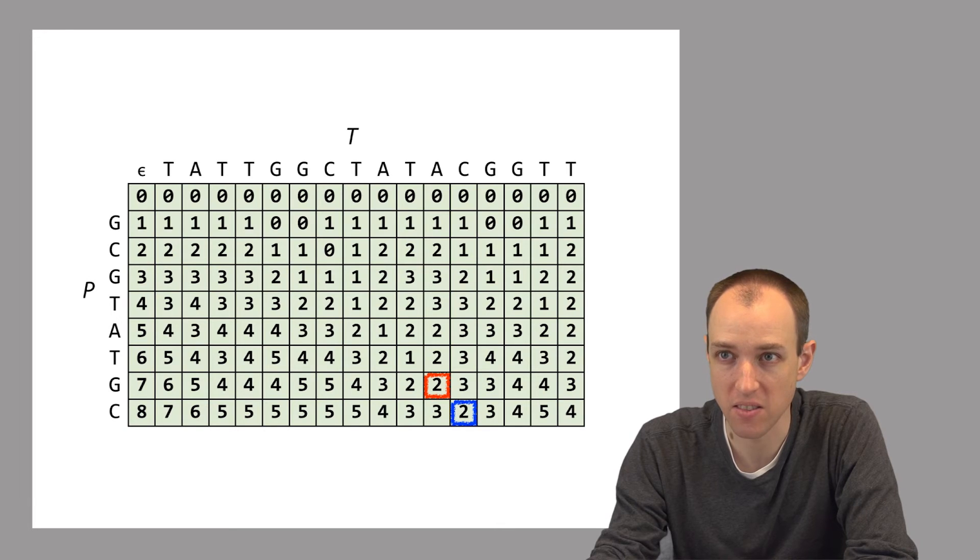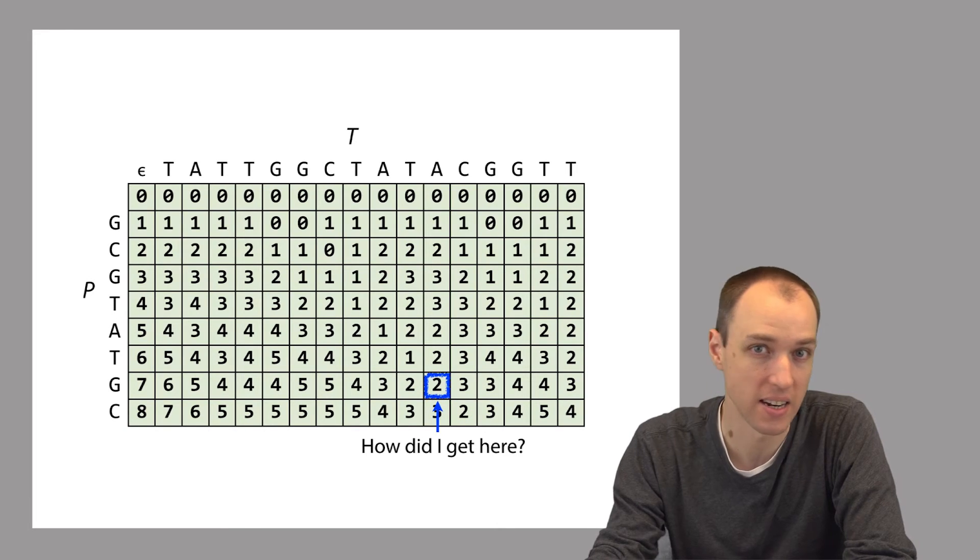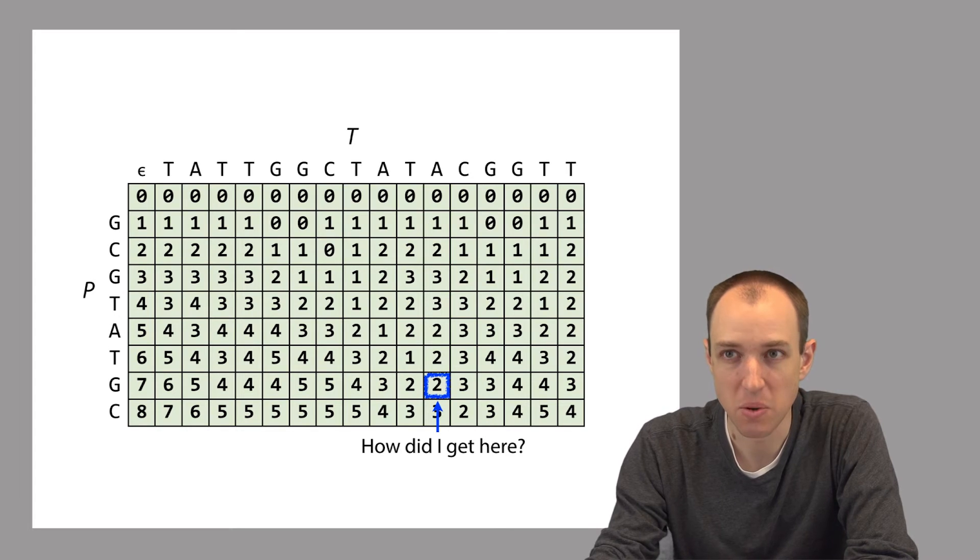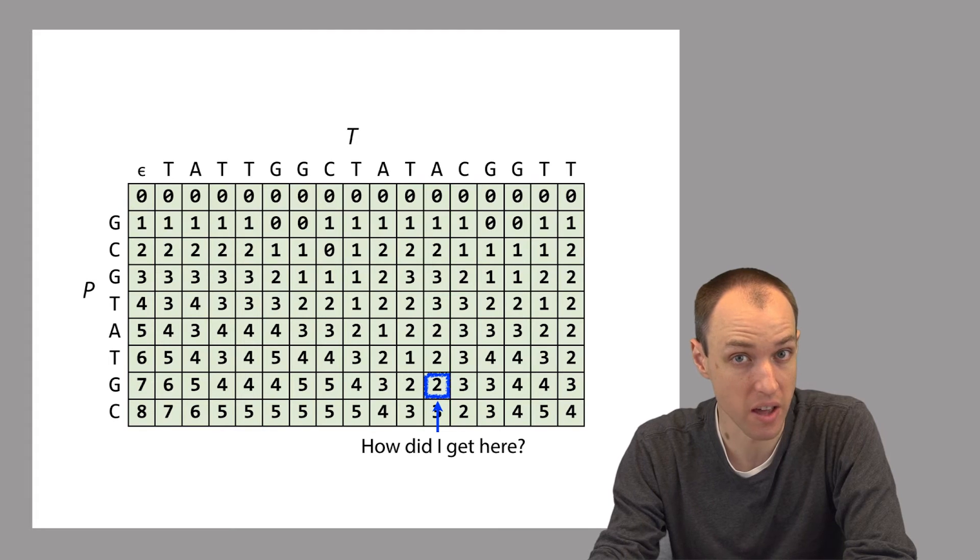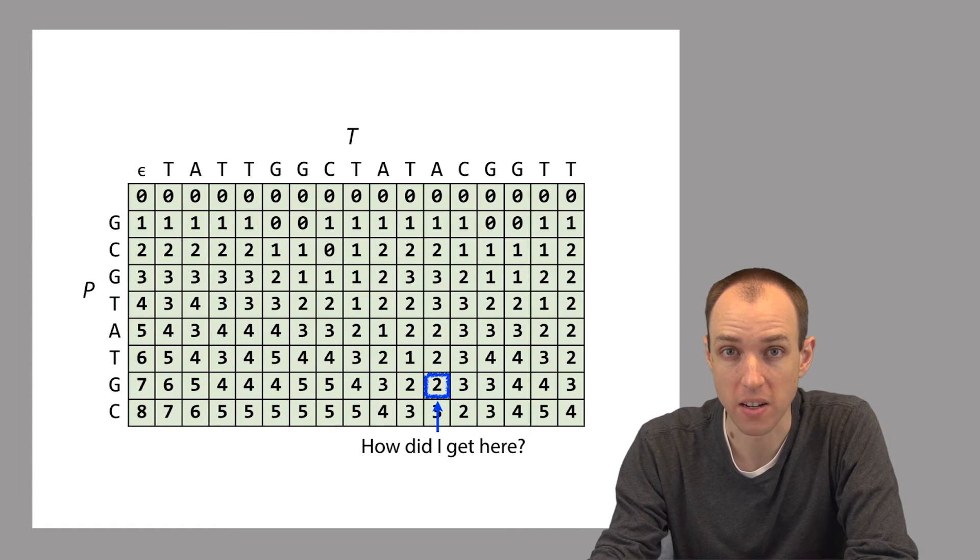That means we got to the blue cell from this red cell. Now we can ask the same question of that red cell. How did I get here? Again we can look at the vertical, horizontal and diagonal contributions. The vertical and horizontal contributions both would be 3 because both the cell above and the cell to the left have a 2 in them. We would have to add 1 for adding on that final gap so they would both contribute 3. But the movement diagonally from above and to the left would only add 1, so we must have come diagonally. We can repeat this procedure to go cell by cell backwards recreating the way that we got the value in each cell.